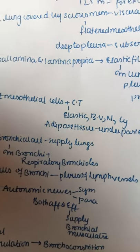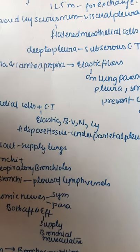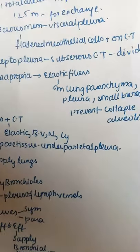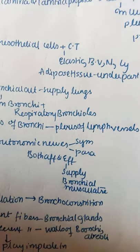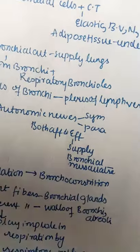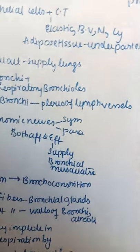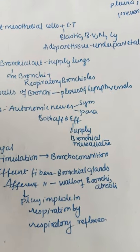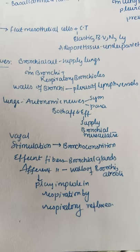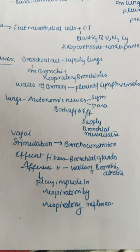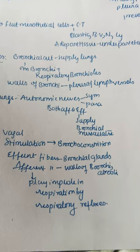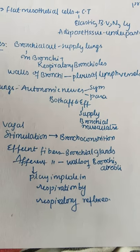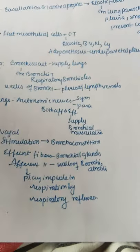The pleura consists of flat mesothelial cells plus connective tissue with elastic fibers, blood vessels, nerves, and lymphatics. Adipose tissue is present under the parietal pleura. The bronchial artery supplies the lungs, bronchi, and respiratory bronchioles. Walls of the bronchi have a plexus of lymph vessels. The lungs are supplied by autonomic nerves — both sympathetic and parasympathetic — with efferent fibers acting on bronchial musculature. Vagal stimulation causes bronchoconstriction. Efferent fibers also act on bronchial glands and the walls of bronchi and alveoli, playing an important role in respiratory reflexes.